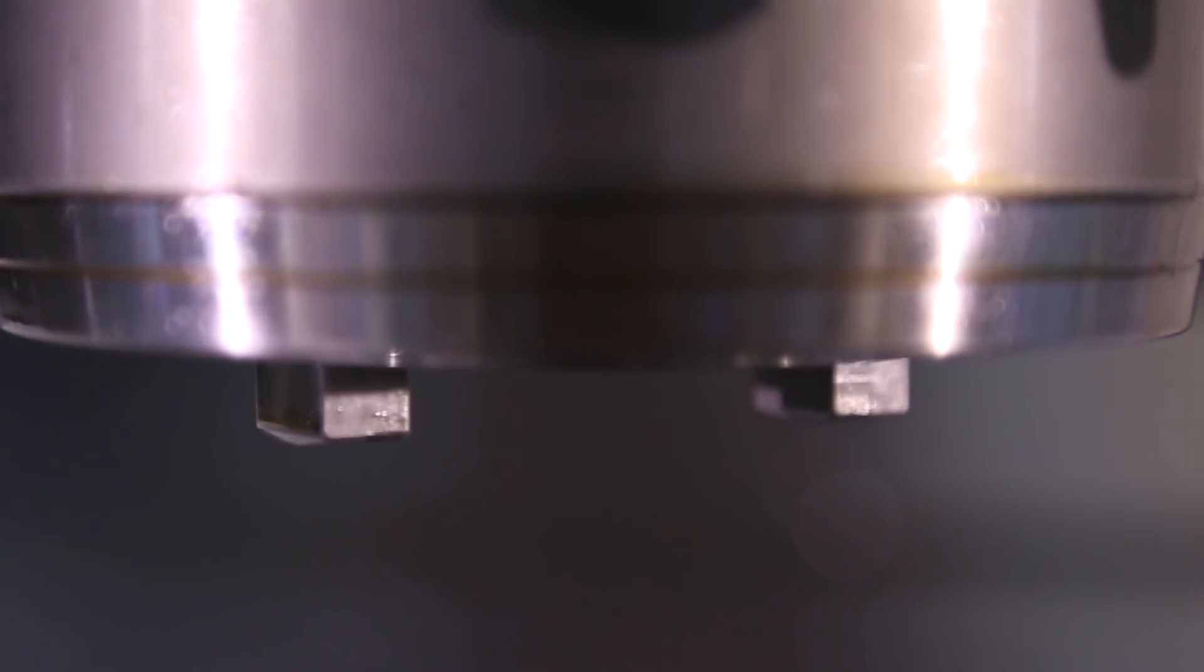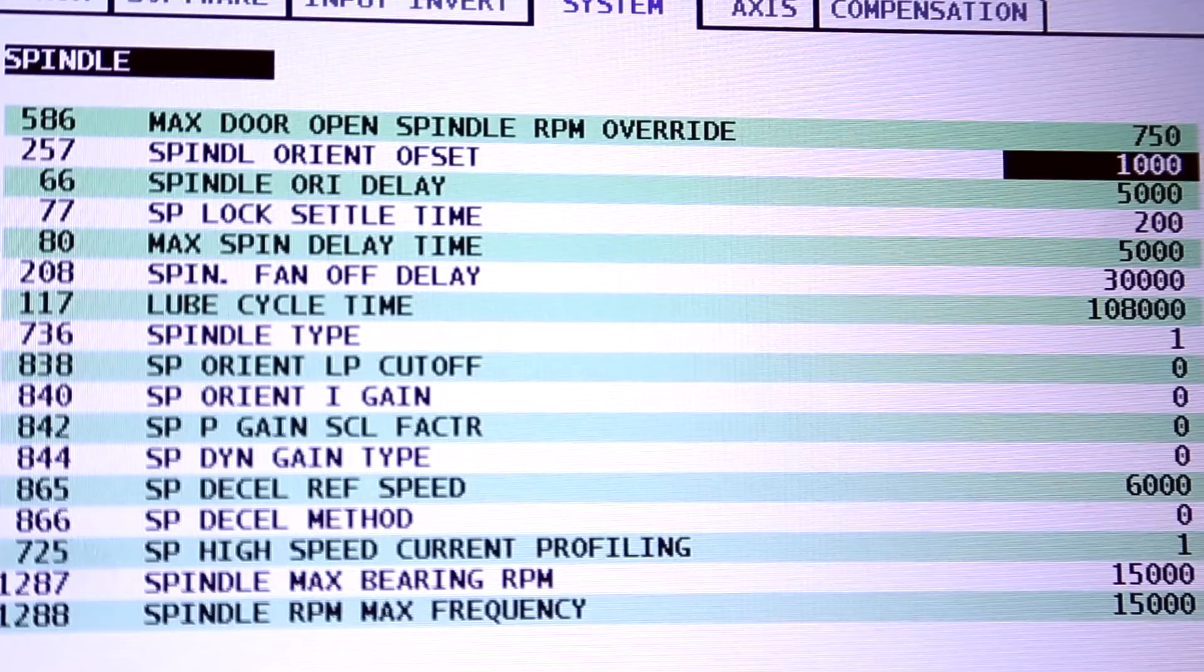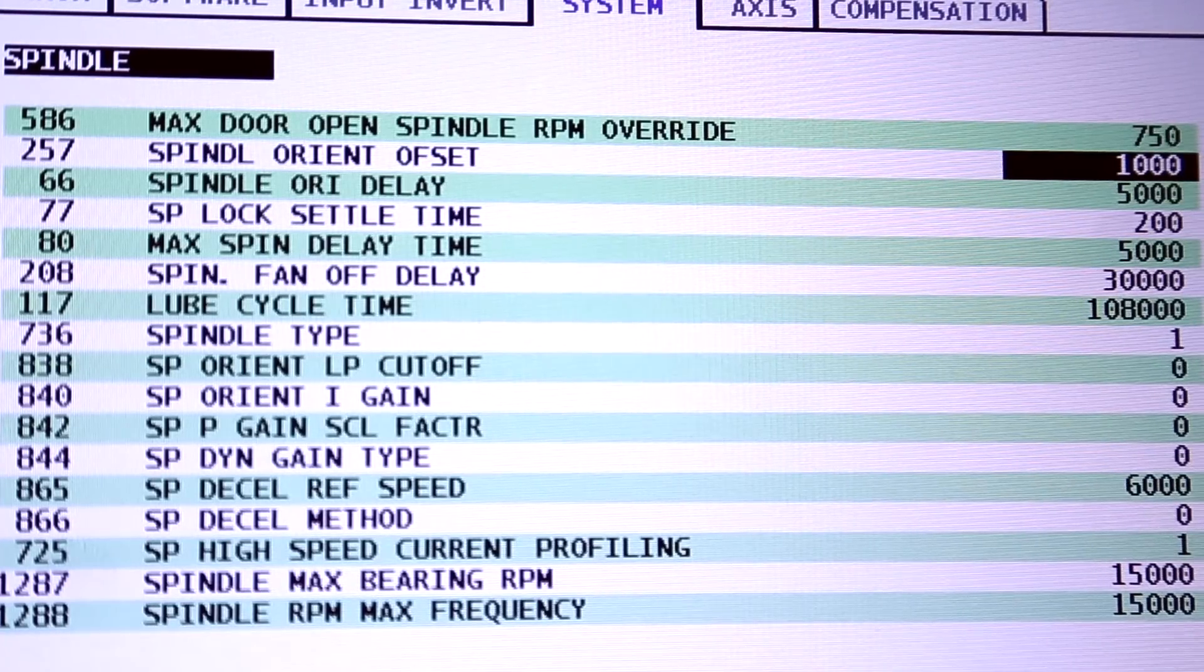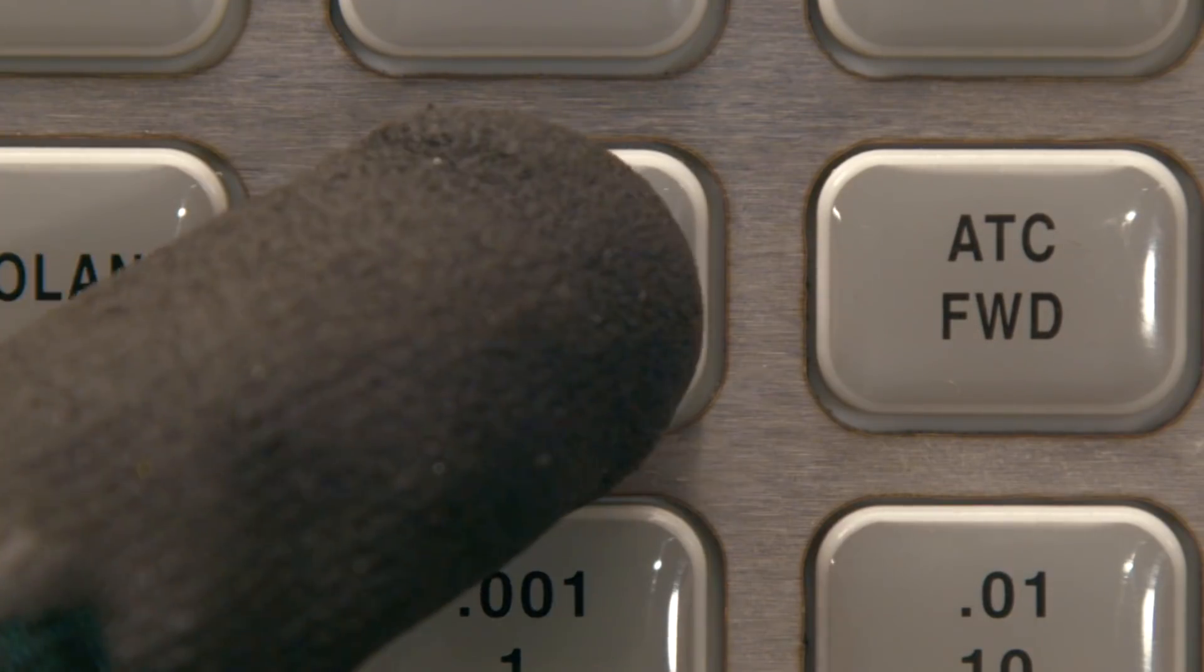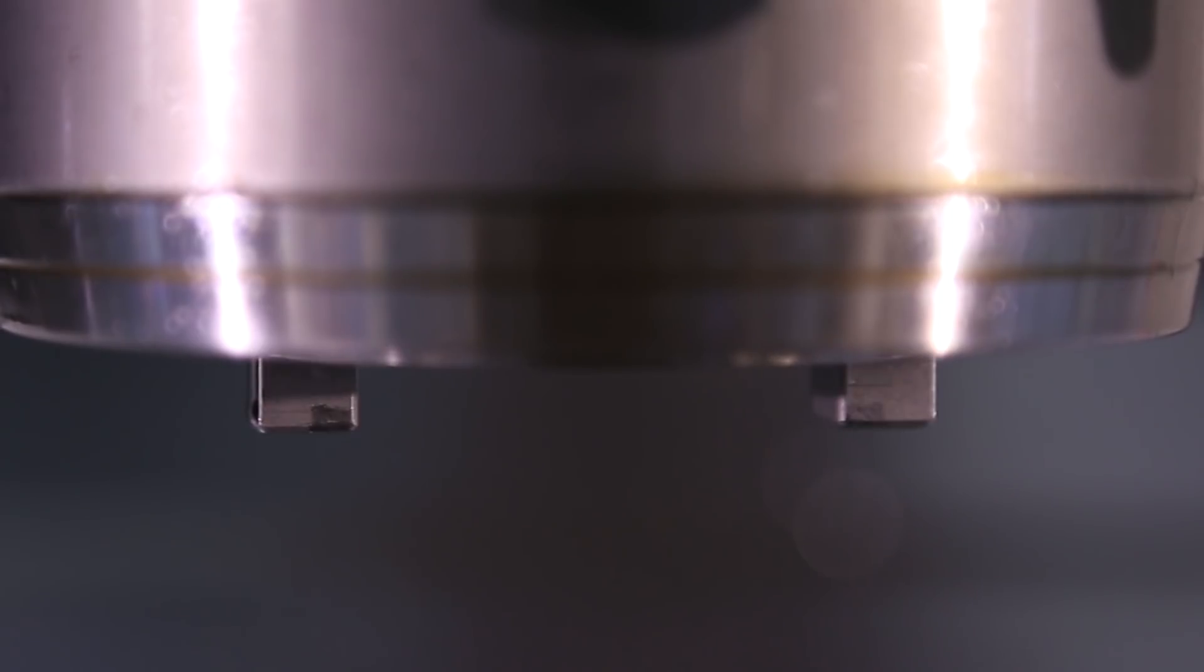In this case it looks like more than a quarter turn off but let's start with that and sneak up on it. The parameter is currently at a thousand so I'll enter 1200 and press spindle orient again and the spindle will orient closer to being parallel to X.